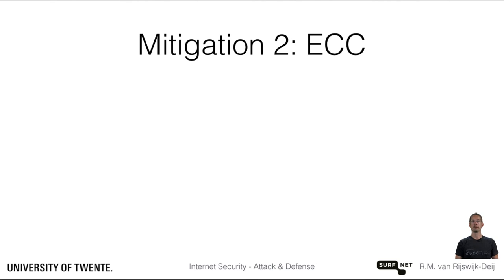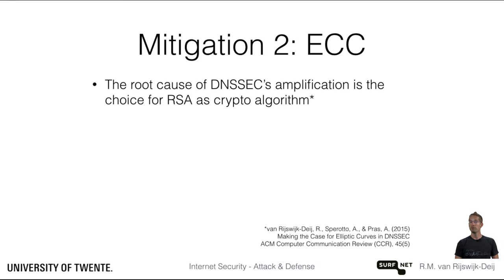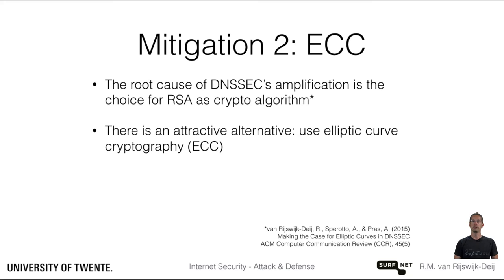Luckily, there is another approach to mitigating the amplification potential in DNSSEC. We argued in a study from 2015 that the root cause of the amplification in DNSSEC is the choice of RSA as default and only mandatory signing algorithm. Luckily, there is an attractive alternative: the use of elliptic curve cryptography.